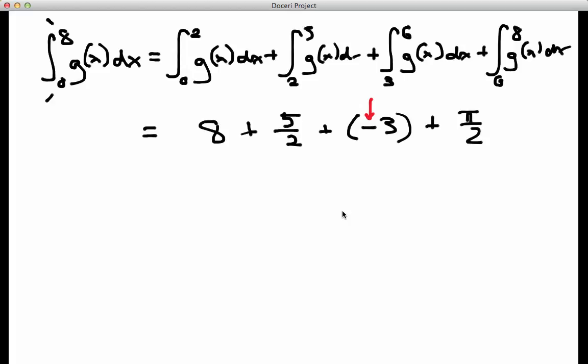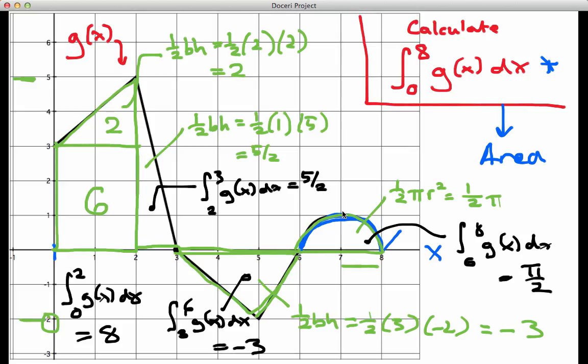So adding all these things up, I'm going to have, I'll skip the arithmetic here, but that will come out to be 15 plus pi divided by two. And that is the exact value of the integral, that is not an estimate. We calculated the exact value because the graph we started with was very geometrically well behaved.